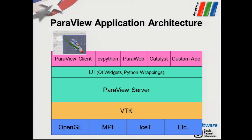Similar to PV Python, there is another tool called PV Batch, which is used with Slurm to execute Python scripts. There is also a web client, which is not quite mature yet, and Catalyst, which is the in-situ visualization library for Python. On top of this you can always create custom animations using Qt widgets for your graphical user interface, running a server underneath.